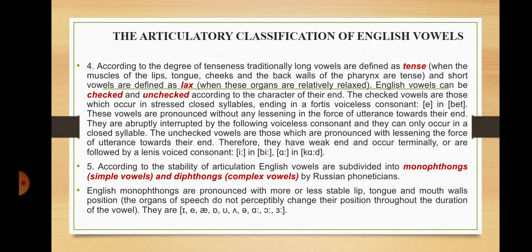English vowels can be checked or unchecked according to the character of their end. Checked vowels are those which occur in stressed, closed syllables ending in a fortis voiceless consonant — for example, the vowel in 'bet'. These vowels are pronounced without any lessening in the force of utterance towards their end; they are abruptly interrupted by the following voiceless consonant and can only occur in a closed syllable. Unchecked vowels are those pronounced with a lessening in the force of utterance towards their end; they have a weak end and occur terminally or are followed by a lenis voiced consonant — for example, the vowel in 'be' or in 'cod'.